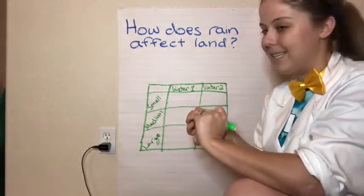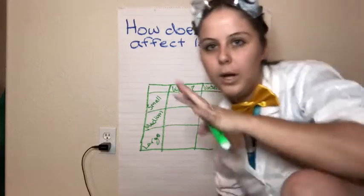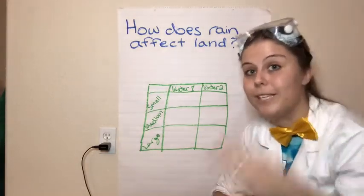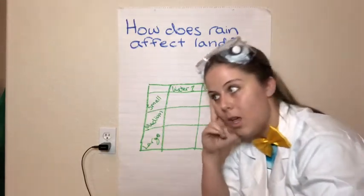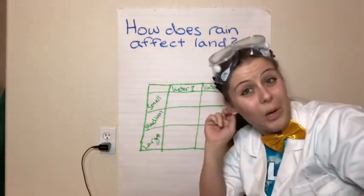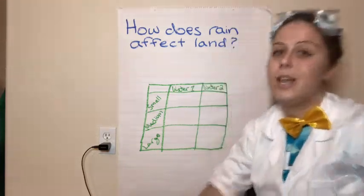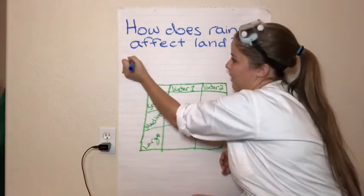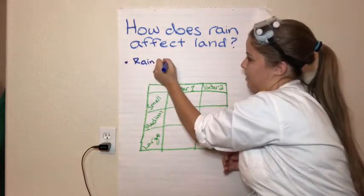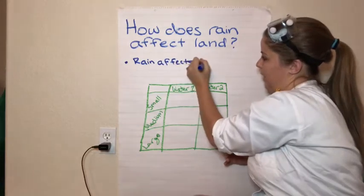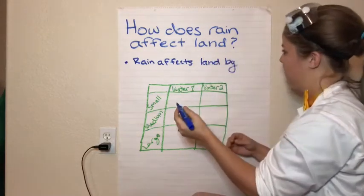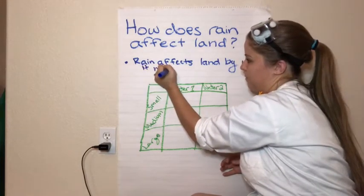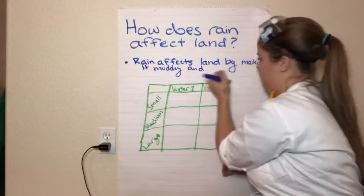First, I need you to be scientists and think about how would rain affect land. Make a hypothesis — a hypothesis is just going to be your prediction. We are predicting the future: if it rains a lot, it gets really muddy; if it rains a little bit, it gets really slippery; if it rains a medium amount, maybe recess is canceled. I want to say that rain affects land by making it muddy and slippery.